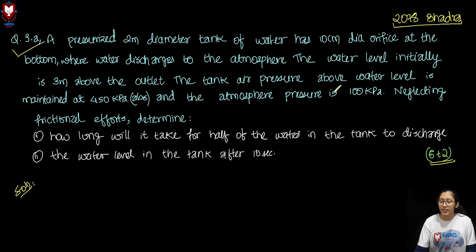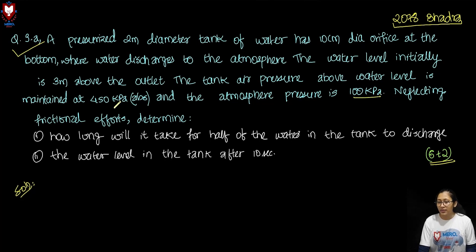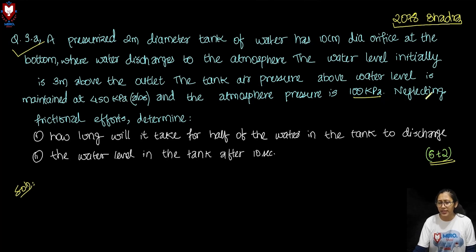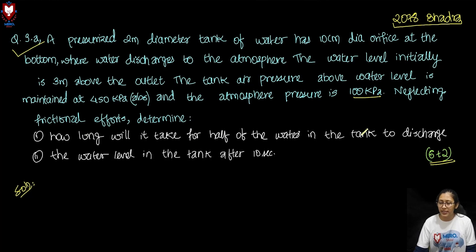Since the given pressure is absolute, if we need gauge reading we subtract atmospheric pressure: 450 minus 100 gives 350 kilopascal gauge. Neglecting frictional effects, we need to determine: (1) how long it will take for half of the water in the tank to discharge, and (2) the water level in the tank after 10 seconds.